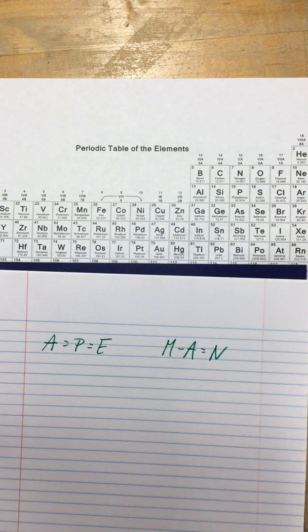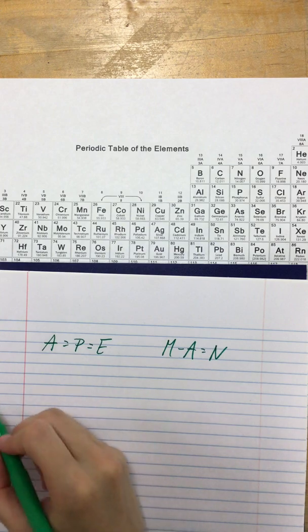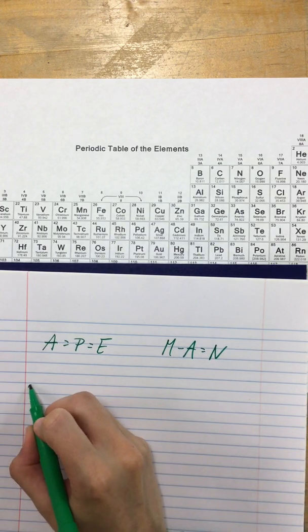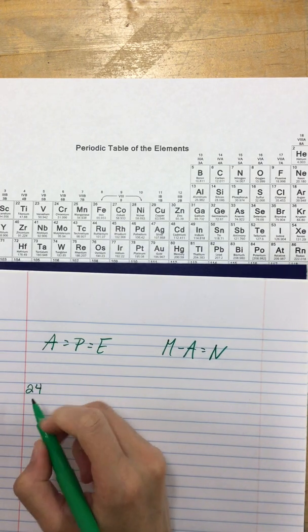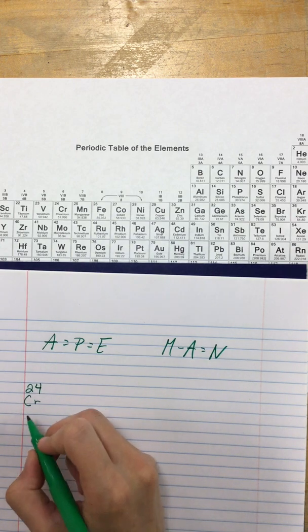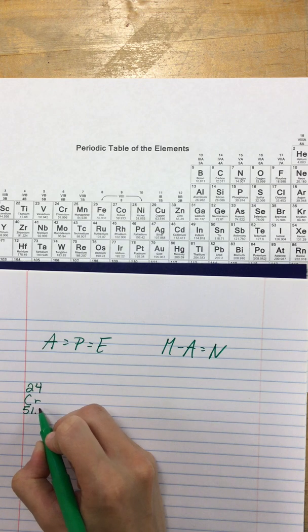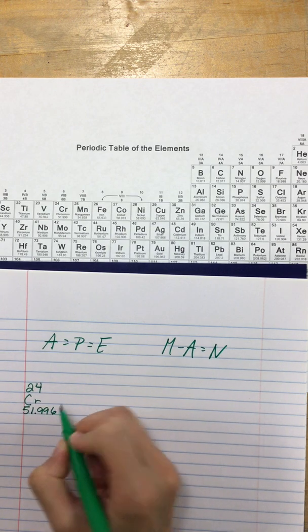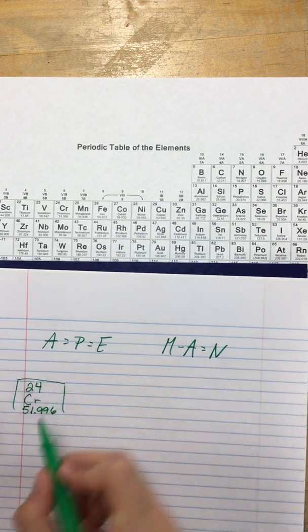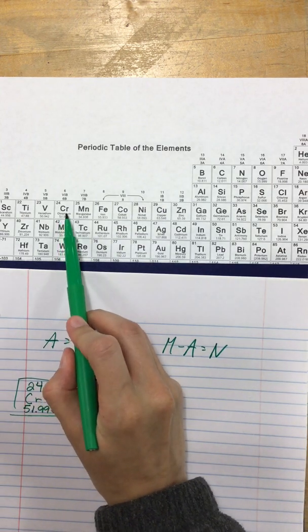Now I'm using element 24. So just like how I do on the computer, I'm going to draw it out for you guys. In this case, Cr 51.996. That's what it looks like on the periodic table.